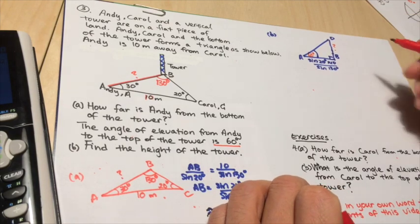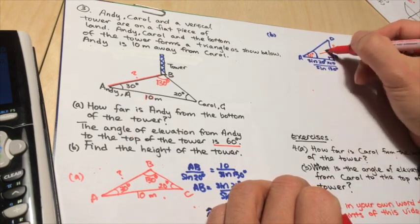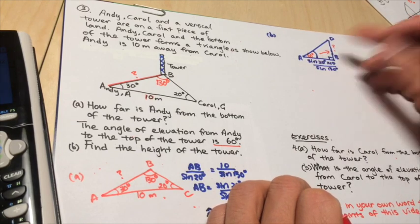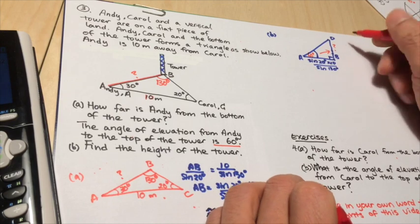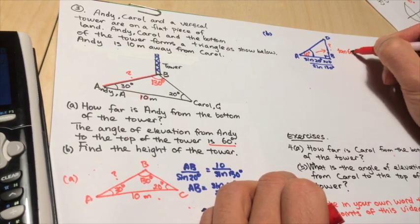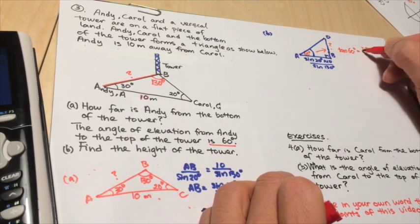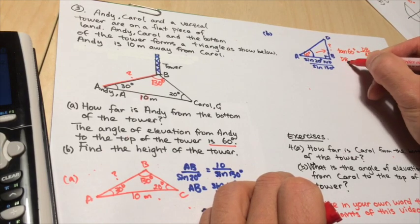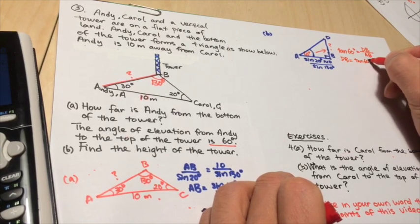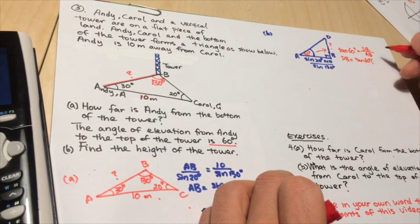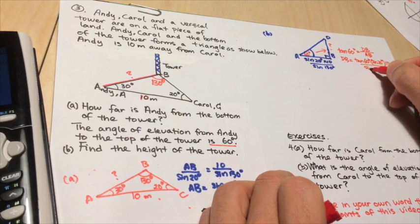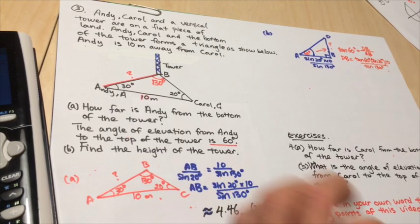I need DB. So what can I connect the height and the adjacent and the angle together? Well, that's very good. That's tangent. So tangent 60 degrees is equal to DB over AB. So DB itself is equal to tangent 60 times sine 20 degrees times 10 over sine 130 degrees. So now I'll put this back into the calculator.